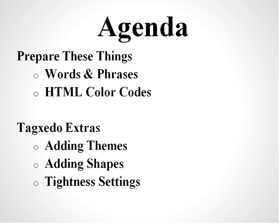On our agenda today are things to prepare ahead of time: your words and phrases that you want to use, including tildes to connect the phrases. If you want to customize your colors, you're going to be using an HTML color code chart. I'm going to show you how to find those and how to use them. And then once we get into TagZito, we're going to be talking about adding themes — those are those custom colors you came up with — and also adding shapes in case TagZito does not have one that you want, and tightness settings.